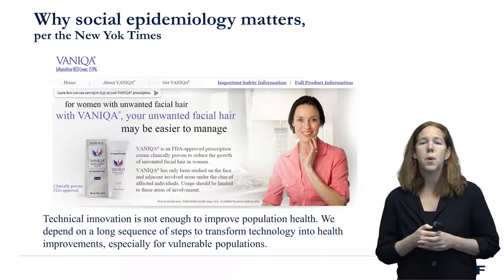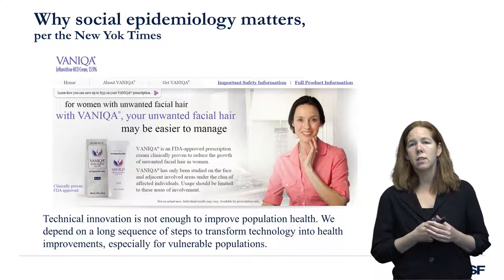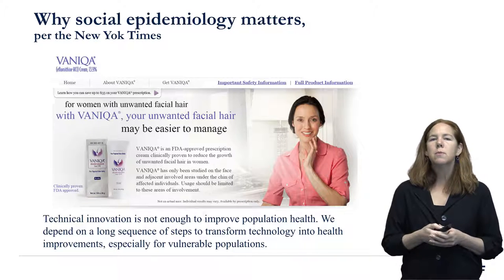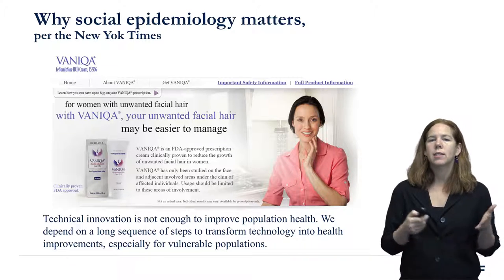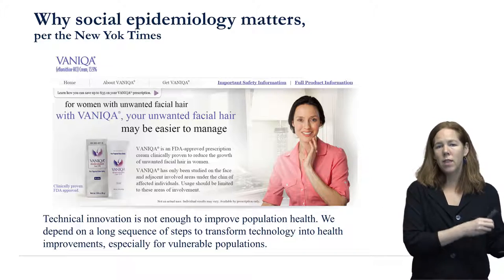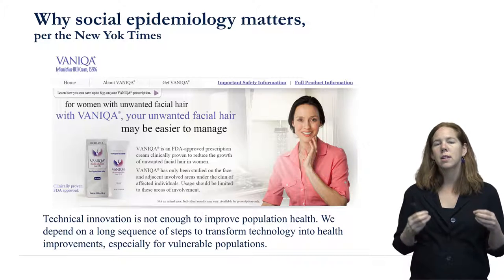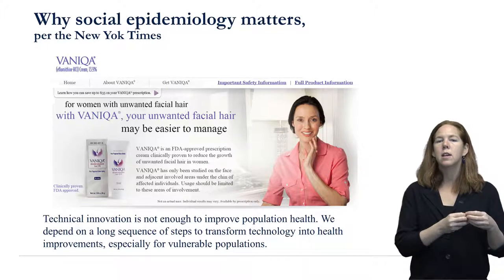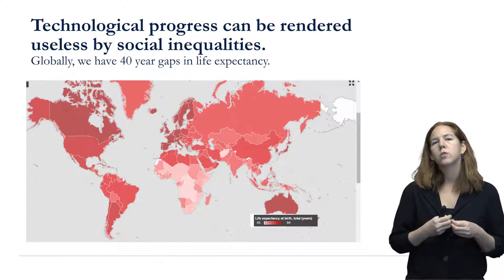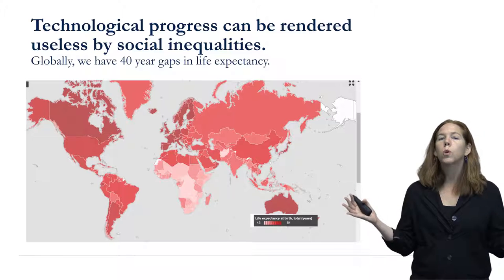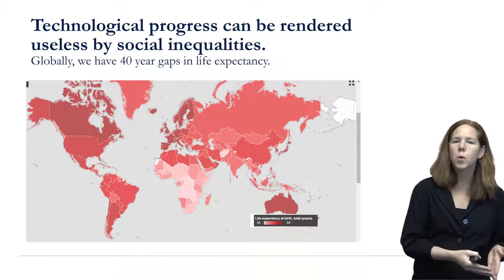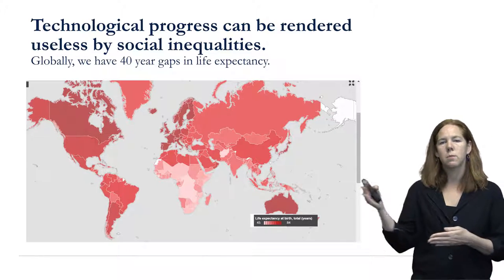Since the company was making it anyway, they were willing to provide it essentially for free to low-income populations in Africa. You can still buy products that include this medication — that's a great thing. But this was pretty compelling about why social processes are so important: we can make all the technical progress in the world and it won't solve health problems unless we link those health problems to social processes that regulate things like the distribution of resources.